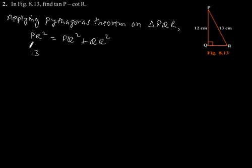So PR is 13, so 13² equals PQ is 12, so 12² plus QR².